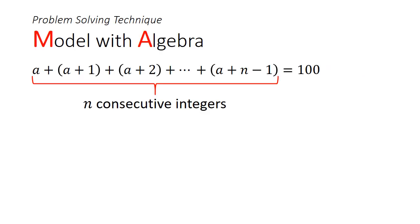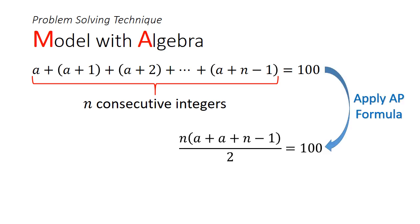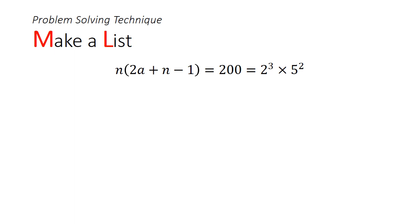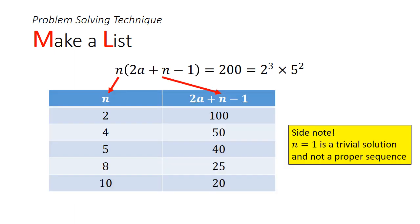To solve this problem, we are going to use algebra to represent the sum of n consecutive integers starting from a. By applying the AP formula, we can simplify further and see that n times 2a plus n minus 1 will give us 200. By prime factorizing 200, we can make a list of possible products like n equals 2, 2a plus n minus 1 equals 100, and so on.